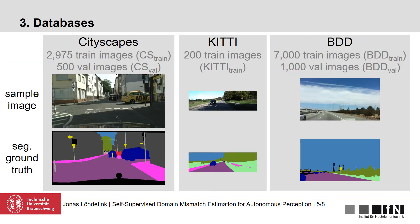To simulate the domain shift, we use three different datasets: namely Cityscapes, KITTI, and Berkeley Deep Drive. As you can already see, these datasets differ not only in image size but also in image content — for example, Cityscapes has mostly urban scenes, while Berkeley Deep Drive also consists of highway scenes.